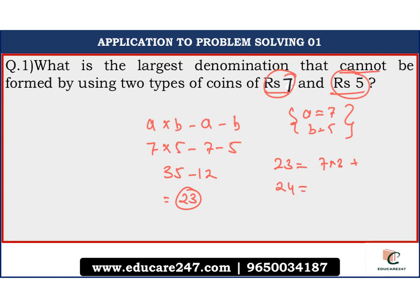If you take 24, you can take 7 into 2 plus 5 into 2. So this can be expressed in the form of ax plus by but 23 cannot be. Hence, your correct answer over here is 23. I hope you are getting the point now. You are getting the concept.